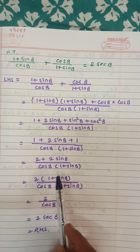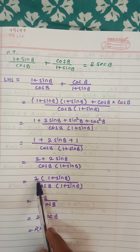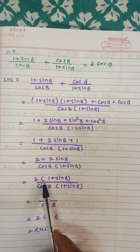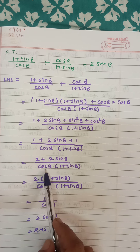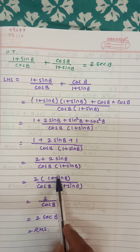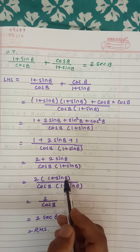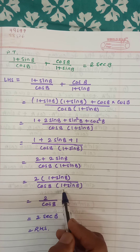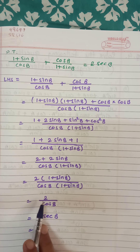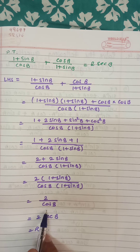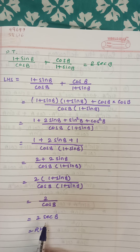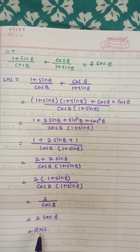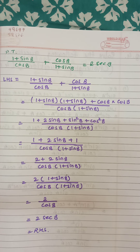Now 1 plus 1 becomes 2, giving 2 plus 2sin b. Take 2 outside: 2(1 plus sin b), with denominator cos b(1 plus sin b). The (1 plus sin b) bracket is the same top and bottom, so it cancels. This leaves 2 upon cos b, which is 2 sec b — equal to the right hand side.